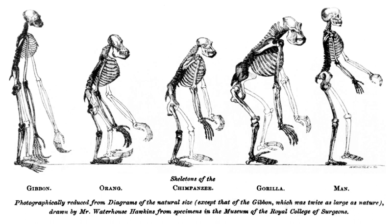In due course, Owen did finally concede that there was something that could be called a hippocampus minor in the apes, but said it was much less developed and that such a presence did not detract from the overall distinction of smaller brain size. Owen's point on brain size was answered by Huxley in Man's Place, and repeated when he wrote a section comparing ape and human brains for the second edition of Darwin's Descent of Man: "The difference between the largest and the smallest healthy human brain is greater than the difference between the smallest healthy human brain and the largest chimpanzee's or orang's brain," and a character thus variable within a single group can have no great taxonomic value.